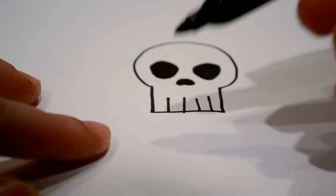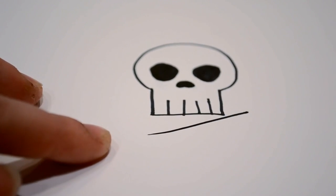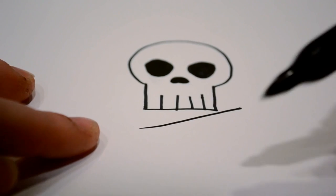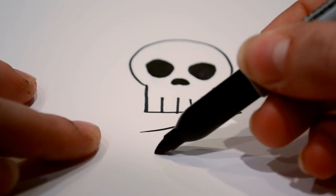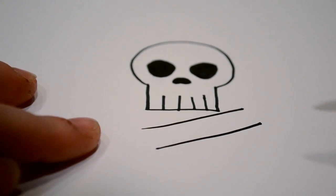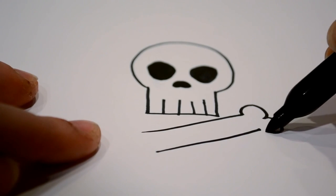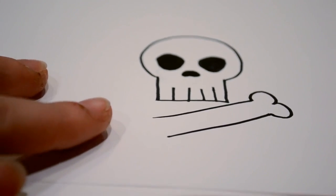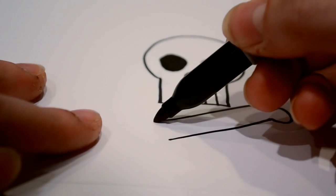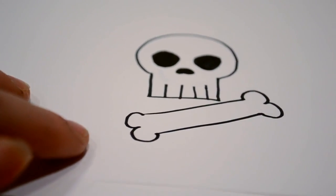And then for the crossbones underneath, these are pretty simple. You just draw a line under it like that. And the line parallel to it. And then you draw a curved bone at the end of it like that. And then the same thing on the other end.